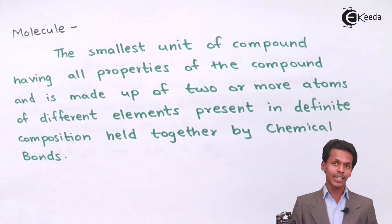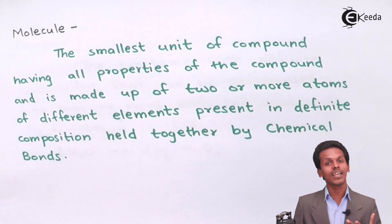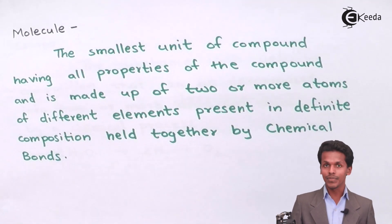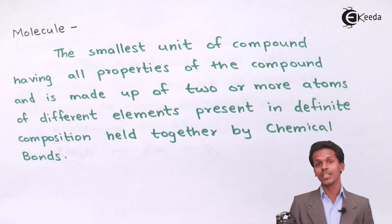It's very simple to understand. Suppose since atom is the smallest particle of an element, similarly a molecule will be the smallest unit of a compound. Suppose if you have a glass of water with you, that is a substance in which you could see that water is present, and if you decompose it you will get hydrogen and oxygen gas that will be involved.